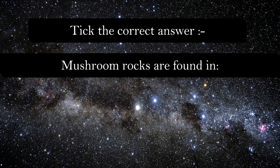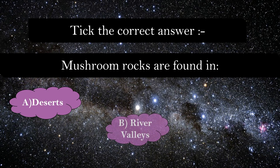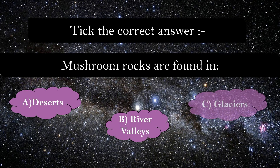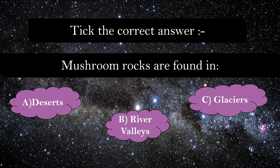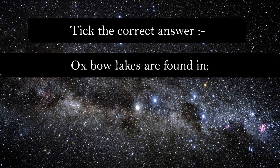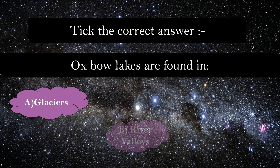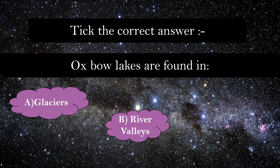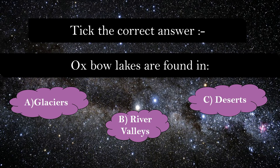Mushroom rocks are found in deserts, river valleys, or glaciers? The correct answer is desert, as we have learnt in exogenic changes. Oxbow lakes are found in glaciers, river valleys, or deserts? Oxbow lakes are formed by rivers, thus they are found in river valleys.